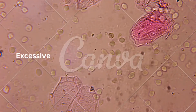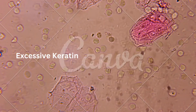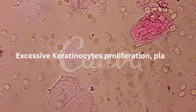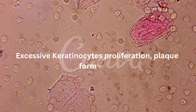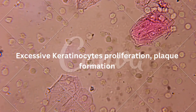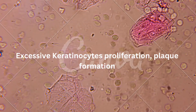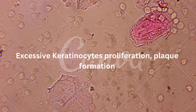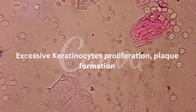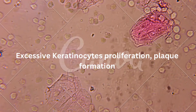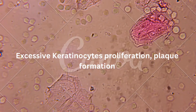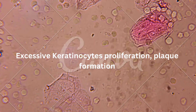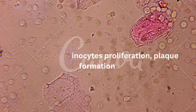Psoriasis is also characterized by abnormal proliferation and differentiation of keratinocytes, the main cells of the epidermis. In normal skin, keratinocytes undergo a cycle of proliferation, differentiation, and shedding, resulting in a steady turnover of the skin.